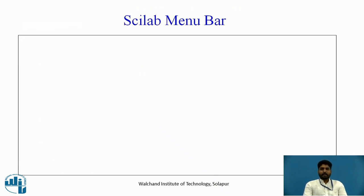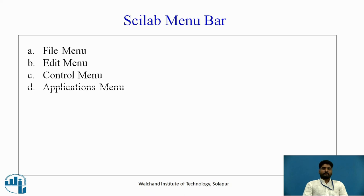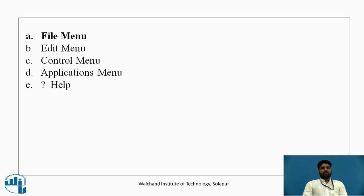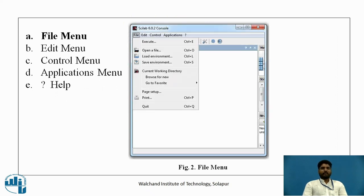Next we will see what are menu bar in Scilab. First menu bar in Scilab is file menu, then you will get to see the edit menu, then control menu, then applications, then help. Help is noted by a question mark. We are going to see what is file menu.